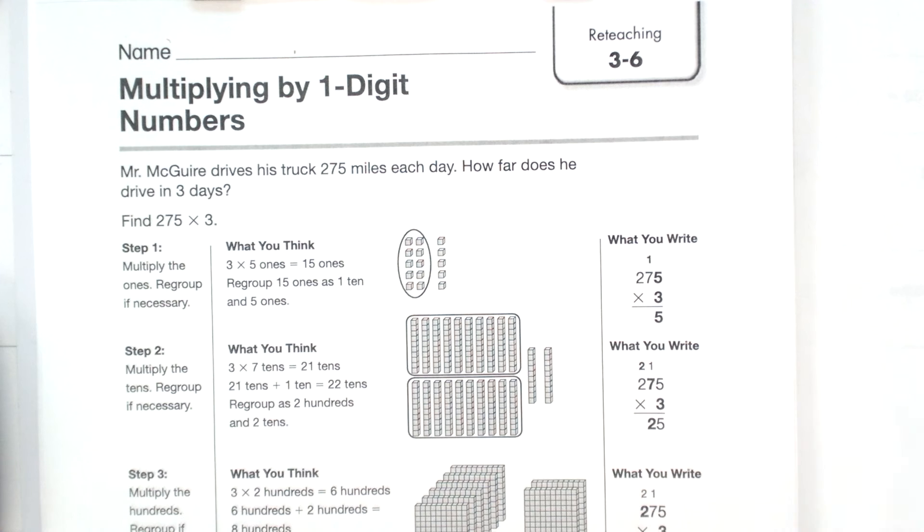Hey kiddos, we're going to be working on Envision Grade 5, Topic 3, Lesson 6, and this is multiplying by one-digit numbers. This is essentially a review of some things that you learned in fourth grade.